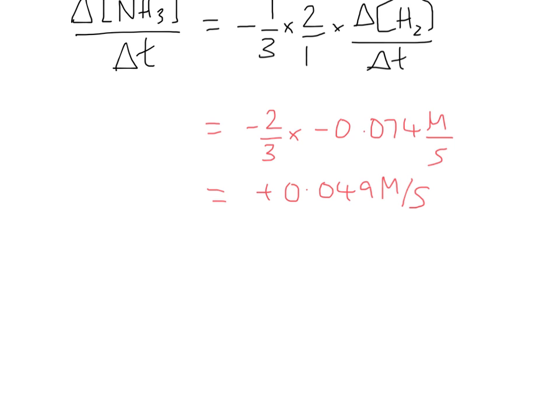So minus delta N2 delta T is equal to minus one-third delta H2 DT.